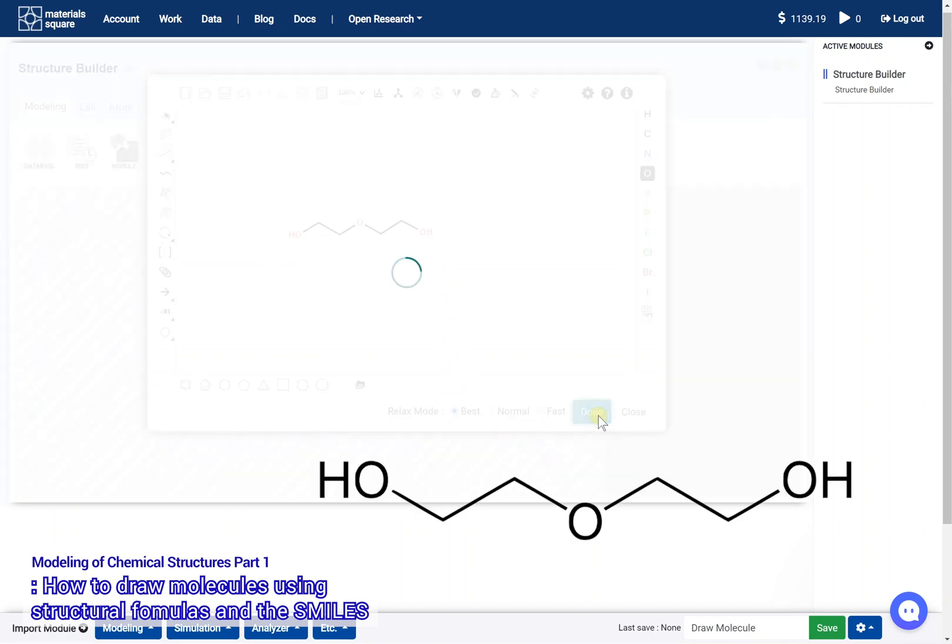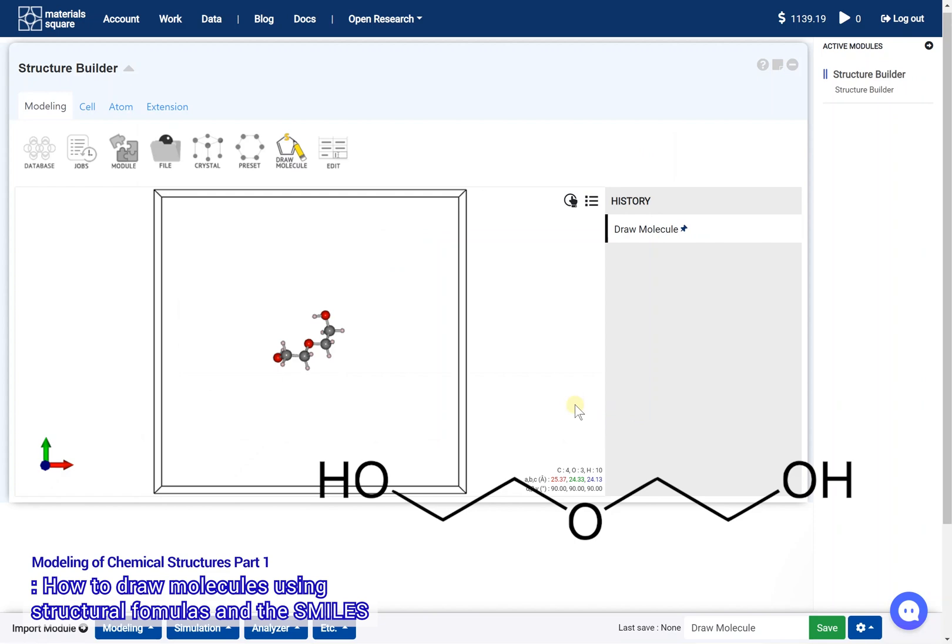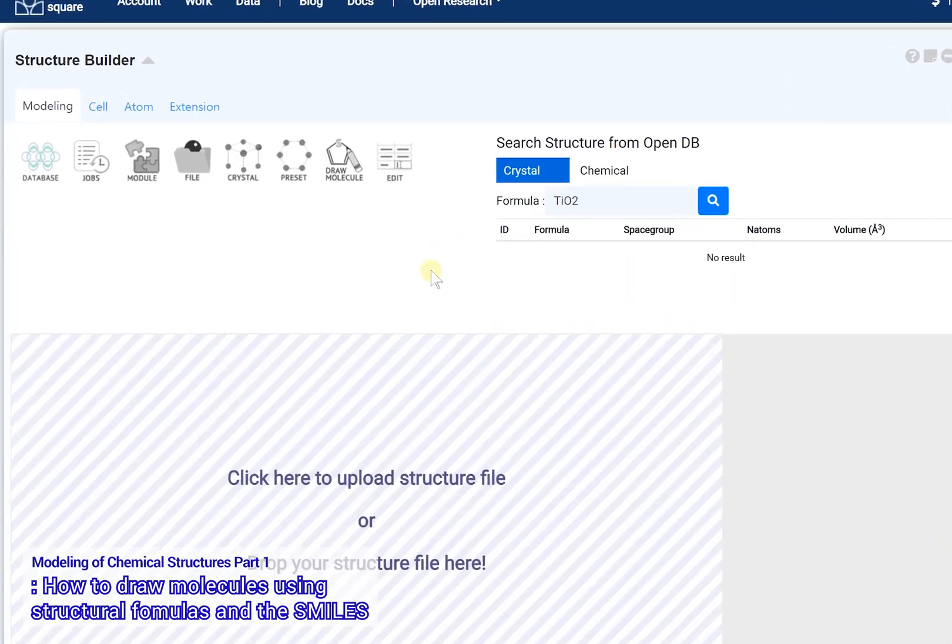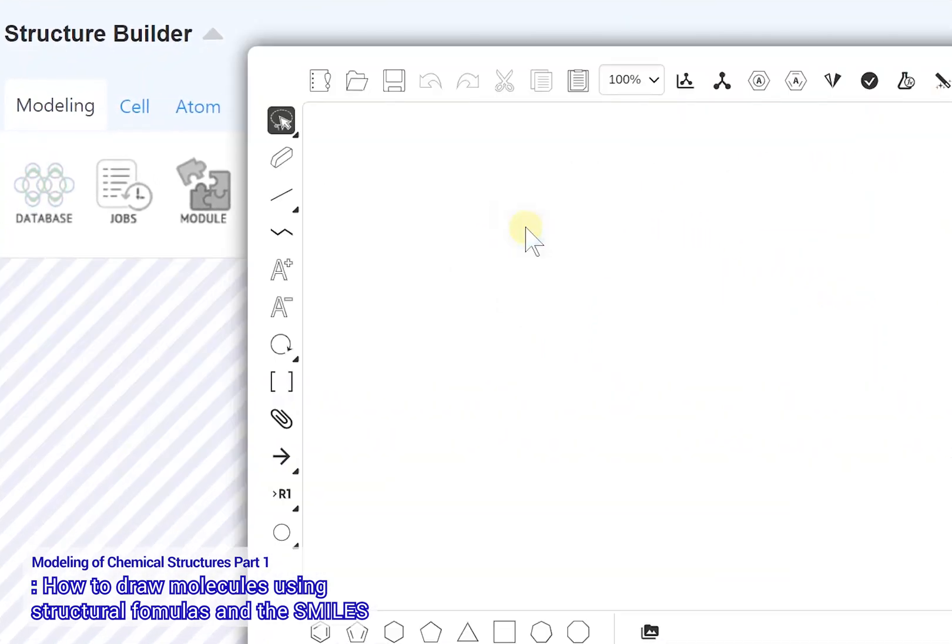As one example of using a structural formula, let me show you how to draw diethylene glycol. Above all, click the Draw Molecule icon and open the canvas.